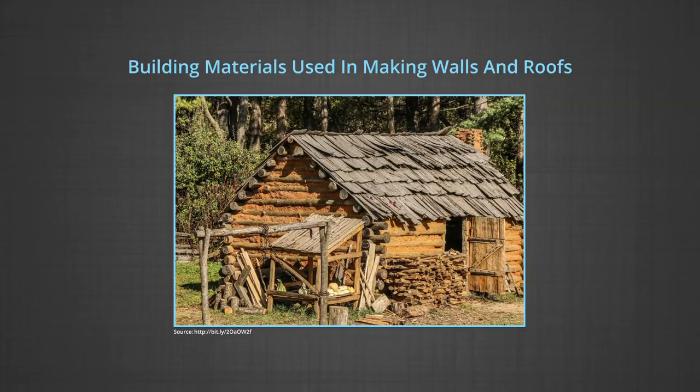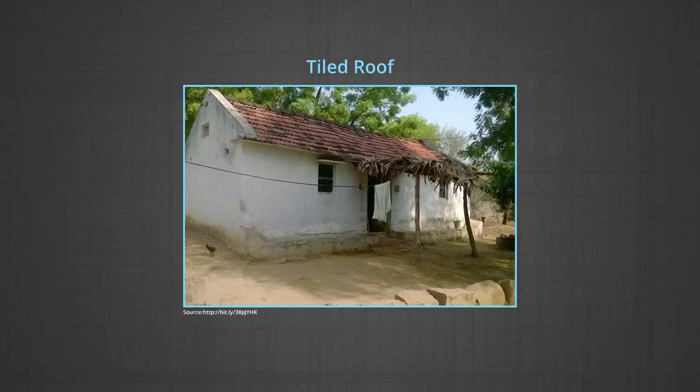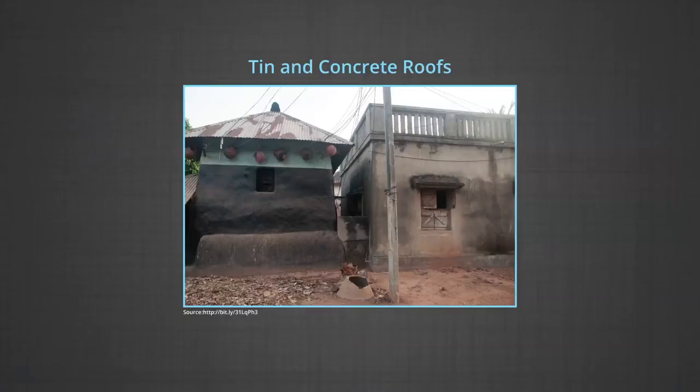On the basis of building materials used for construction, dwellings can be grouped into two categories: building materials used for making walls — in India, mud, stone, tin, bricks, and timber are used — and building materials used for making roofs, which include tiles, thatch, mud, tin, stone slab, wood, and bricks. But now the use of traditional building materials is not very popular and is being replaced by materials like iron, tin sheets, concrete, and cement.